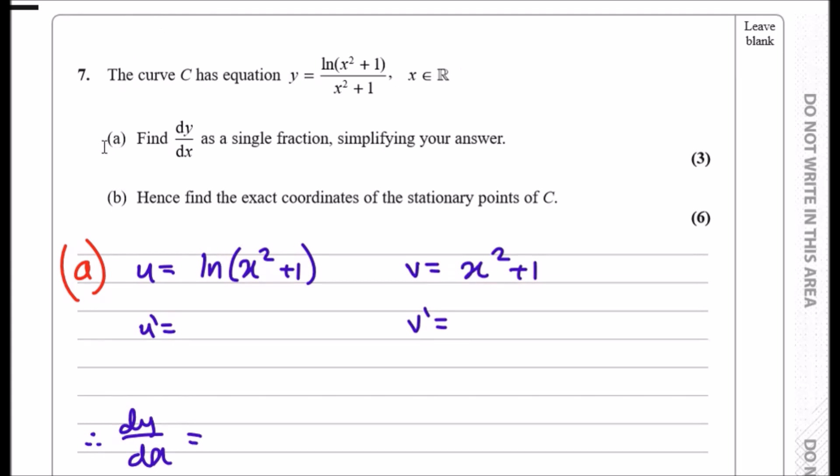For part a, we need to find dy over dx. To find dy dx, you must remember that when you've got a function over another function, we need to use the quotient rule. The quotient rule is so easy. You literally just pick the top half as u, the bottom half as v.